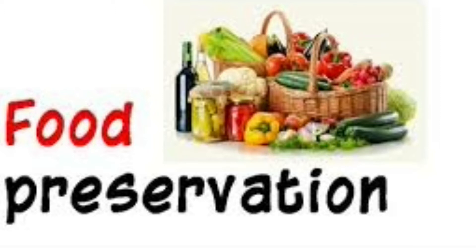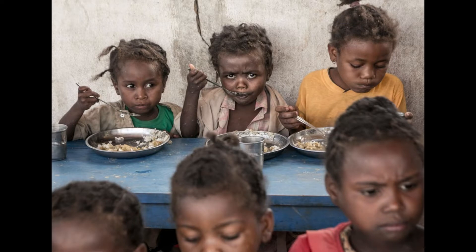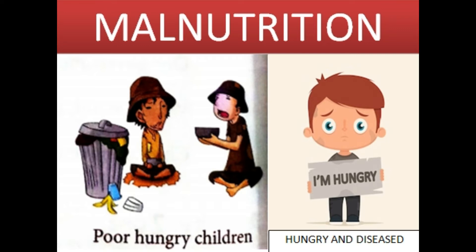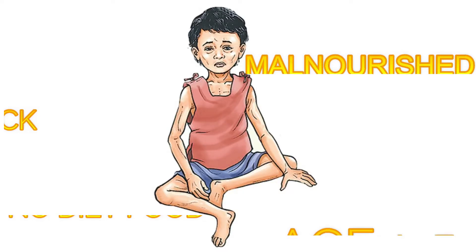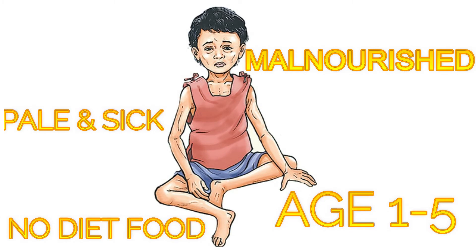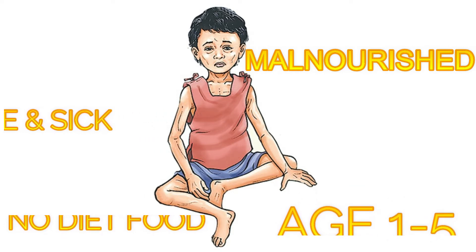Let us learn first about malnutrition. Hungry and diseased persons are closely related. A person who does not get enough food to eat suffers from malnutrition. There are a large number of people in the world who are malnourished because they don't get enough money to buy food and are not able to eat enough to meet their nutritional needs. Many children at the age of 1 to 5 look pale and sick because they are suffering with malnutrition. They are not getting enough nourishment from their food.